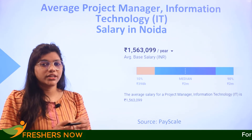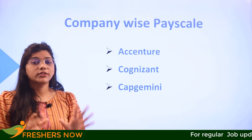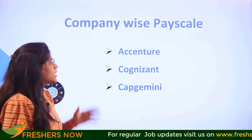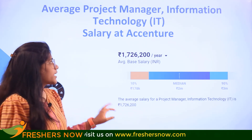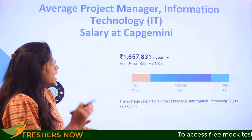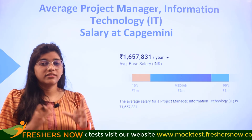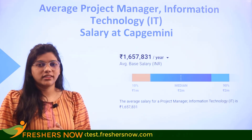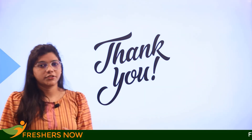Considering three major companies, Accenture pays their IT project managers 17 lakhs per annum, Cognizant pays 15 lakhs per annum, and Capgemini pays 16 lakhs per annum. If you are targeting any of these three major companies for the role of a project manager, you can consider yourself aiming for this level of pay and further growth.